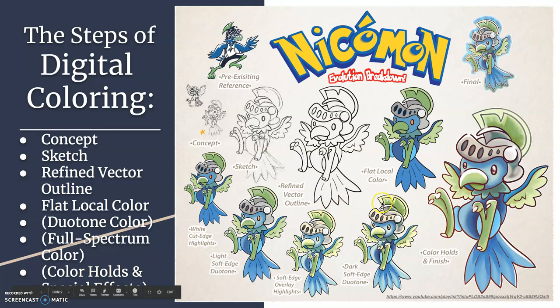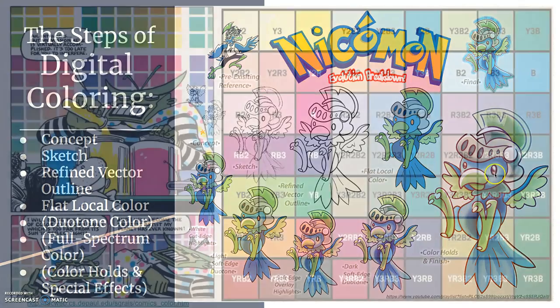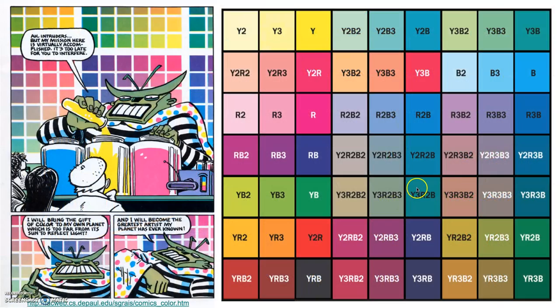You can even do what's called a color hold, where you replace the black outline in certain places with other things like little highlight sparkles. I actually replaced all the black with a reddish brown to help make the blue pop — and that's the finished spot illustration, which can go on any kind of background. The basic steps are: concept, sketch, refined vector outline, flat local color, duotone color, full spectrum color, color hold, and special effects. Full spectrum is if you wanted to push beyond just the local color variations.